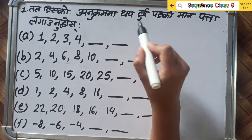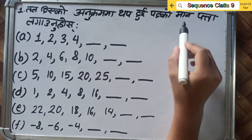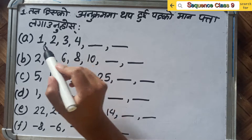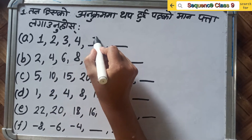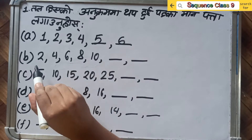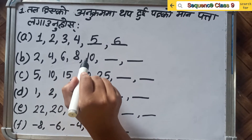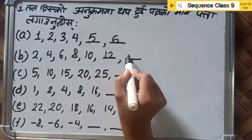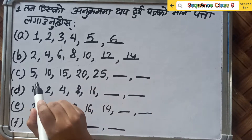What is the most important part of this video? Let's get started. Counting by 1s: 1, 2, 3, 4, 5 and 6. Counting by 2s: 2, 4, 6, 8, 10, 12 and 14.